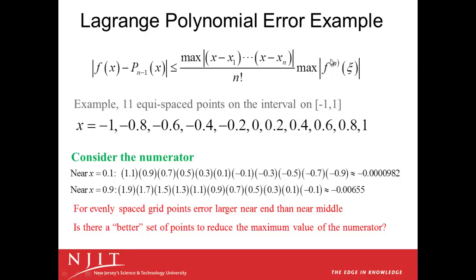And we can notice that near the middle of the interval, consider if x is equal to 0.1, then each of these pieces in the numerator become things like 0.1 minus negative 1, or 1.1, 0.1 minus negative 0.8, or 0.9, and so forth. And this product of the 11 values comes out to around 0.0000982.